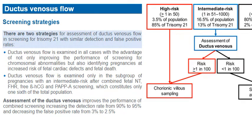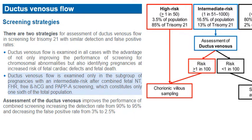There are two strategies for assessment of ductus venosus flow in screening for trisomy 21, with similar detection and false positive rates. In the first strategy, ductus venosus flow is examined in all cases, with the advantage of improving screening for chromosomal abnormalities and identifying pregnancies at increased risk of cardiac defects and fetal death. In the second strategy, ductus venosus flow is examined only in the subgroup with intermediate risk after combined first-trimester screening including NT, FHR, free beta-hCG, and PAPP-A. Assessment of ductus venosus flow improves combined screening performance, with detection rate increasing from 90 to 95% and false positive rate decreasing from 3 to 2.5%.